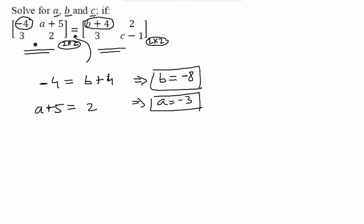If you compare these two elements, then they are already equal and there is no variable. So if there was some case that this element was 3 but this element was 4, then the equality was never a possibility. But that is not the case here.